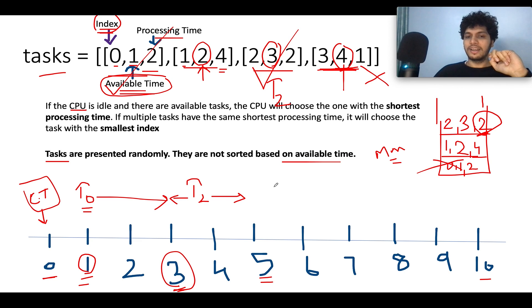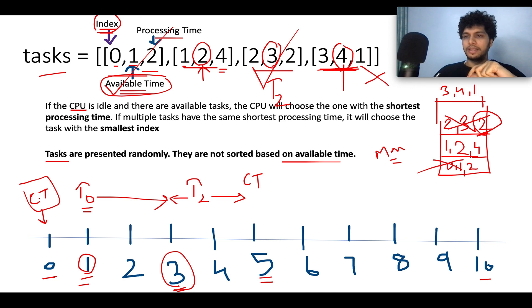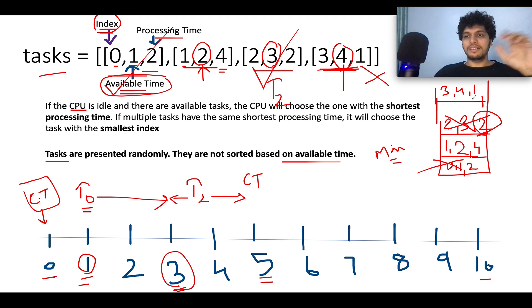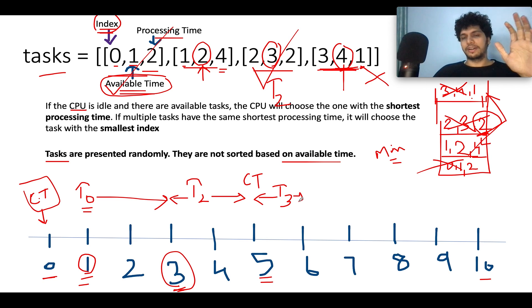Now our current time is updated to five. We check which tasks have become available — task 3 (available at time four) is now available, so we insert it into the min heap. The CPU is idle at time five and asks the min heap for the next task. The task with lower processing time — task 3 with processing time one — is pulled out and executed from time five to six.